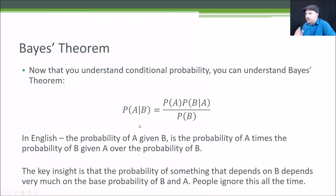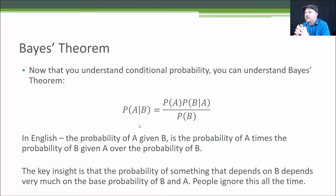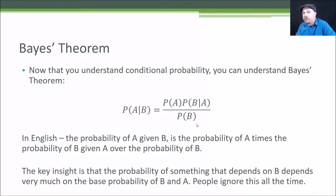You can substitute A and B with whatever you want. One common example is drug testing — what's the probability of being an actual user of a drug given that you tested positive for it? The reason Bayes' theorem is important is that it calls out that this very much depends on both the probability of A and the probability of B. It also means that the probability of B given A is not the same thing as the probability of A given B.